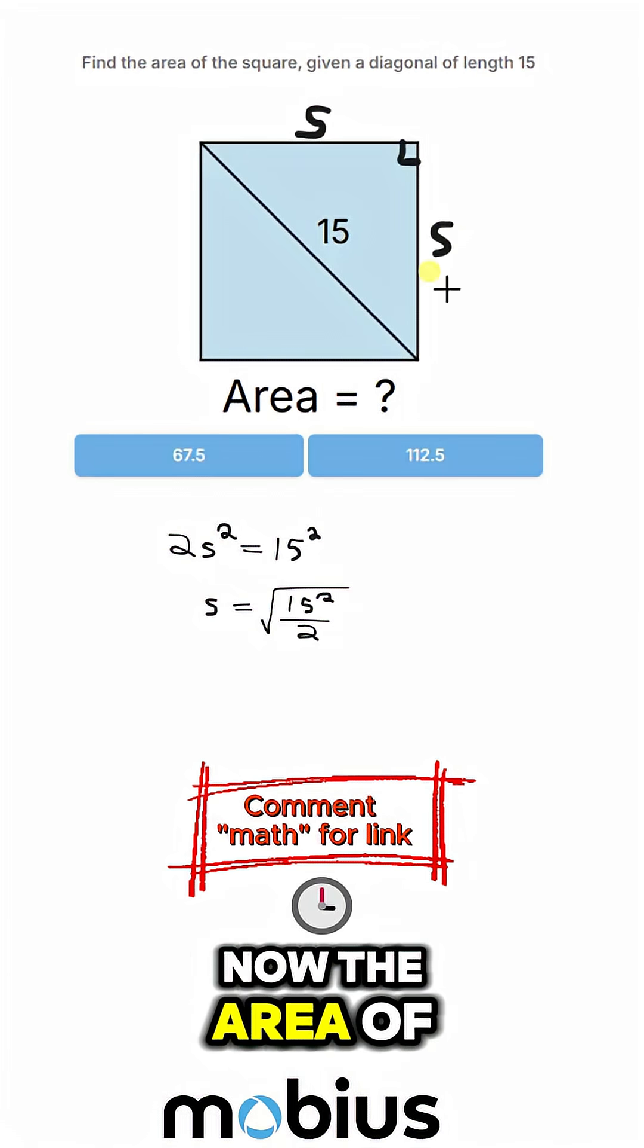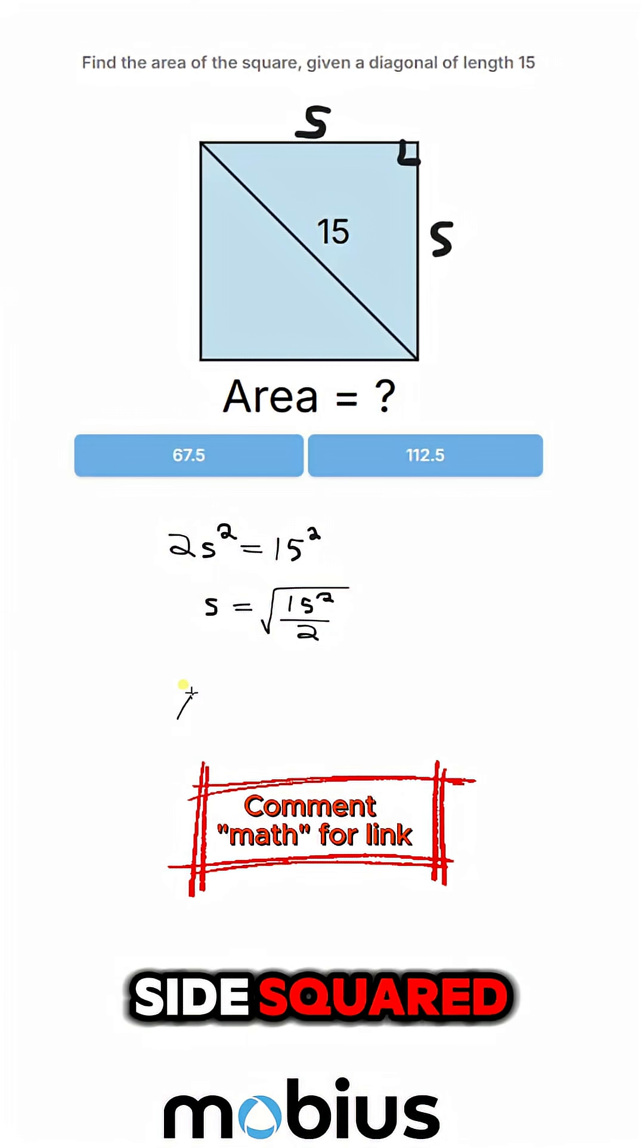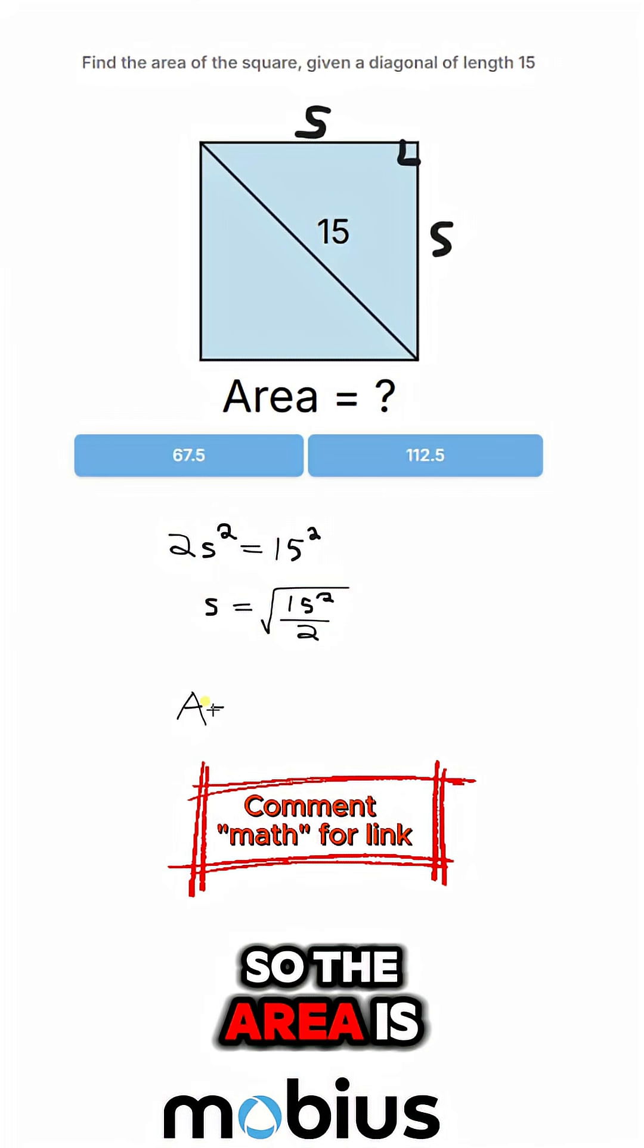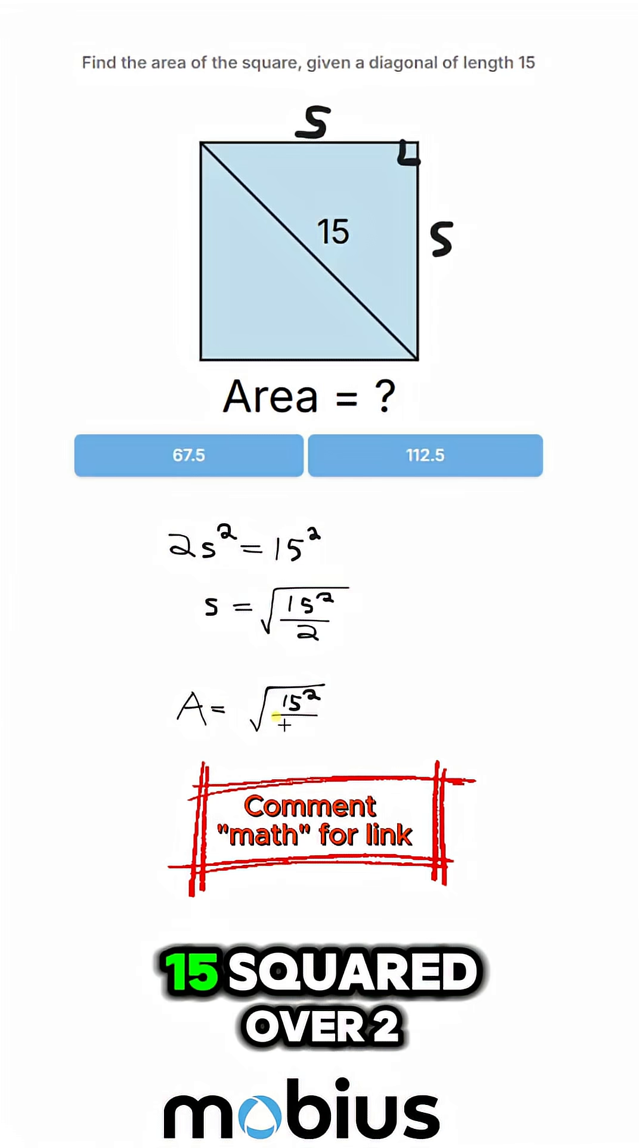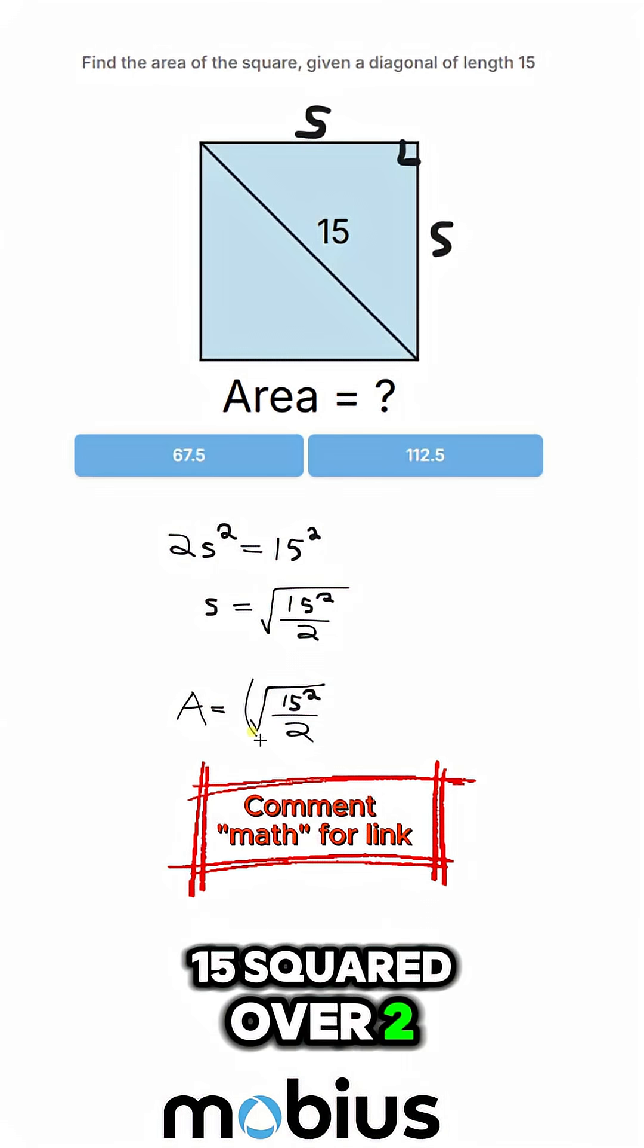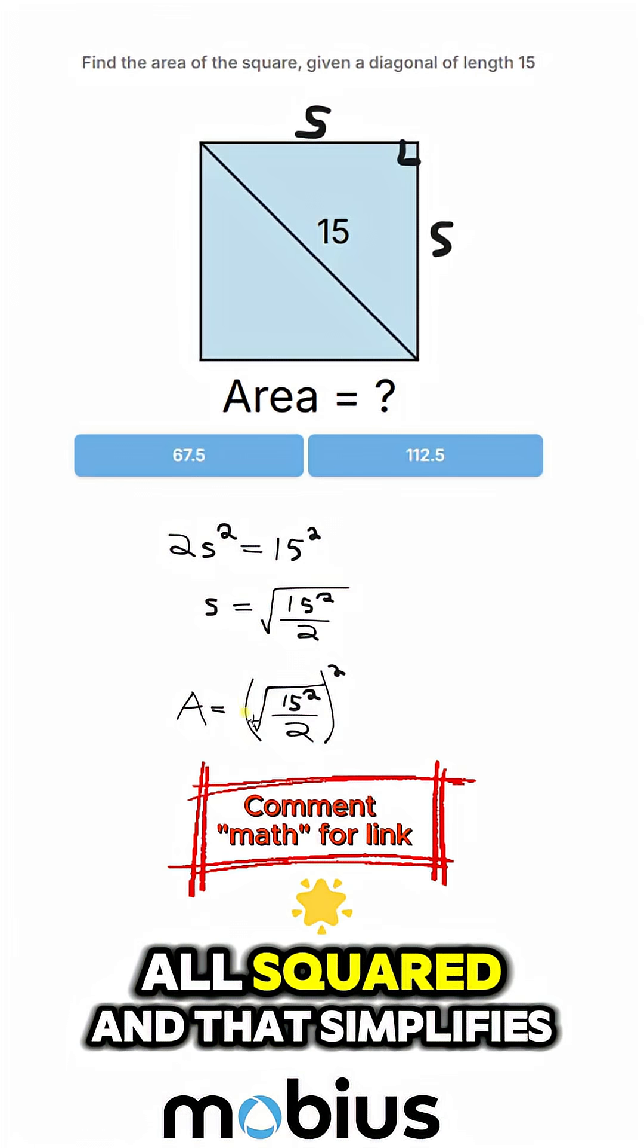Now the area of our square obviously is side squared. So the area is side squared. So we take all of this root of 15 squared over 2 all squared.